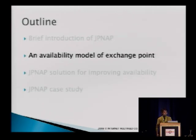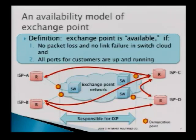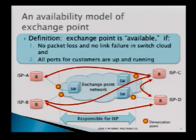So availability is also important for an exchange point. First I would like to propose a very simple but strict model of availability for an exchange point. This abstract configuration is the typical one. There is an exchange point network which consists of multiple Ethernet switches linked together, making a switching cloud. ISPs connect their routers to this switching cloud.